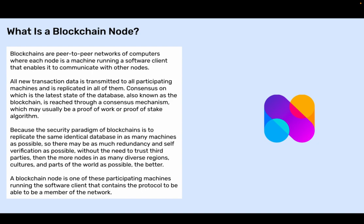All new transaction data is transmitted to all participating machines and is replicated in all of them. Consensus on which is the latest state of the database, also known as the blockchain, is reached through a consensus mechanism which may usually be a proof-of-work or proof-of-stake algorithm.